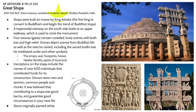There are actually inscriptions on the stupa indicating the names of over 600 people that contributed to its construction — men, women, monks, common people — basically anyone who wanted a piece of that karmic capital. Contributing money to the construction of the stupa is one of the ways you can move your way up the ladder and achieve enlightenment eventually. The stone was originally painted white, and after 2,000-plus years some of the pigment has worn away, revealing the natural color of the stone underneath.